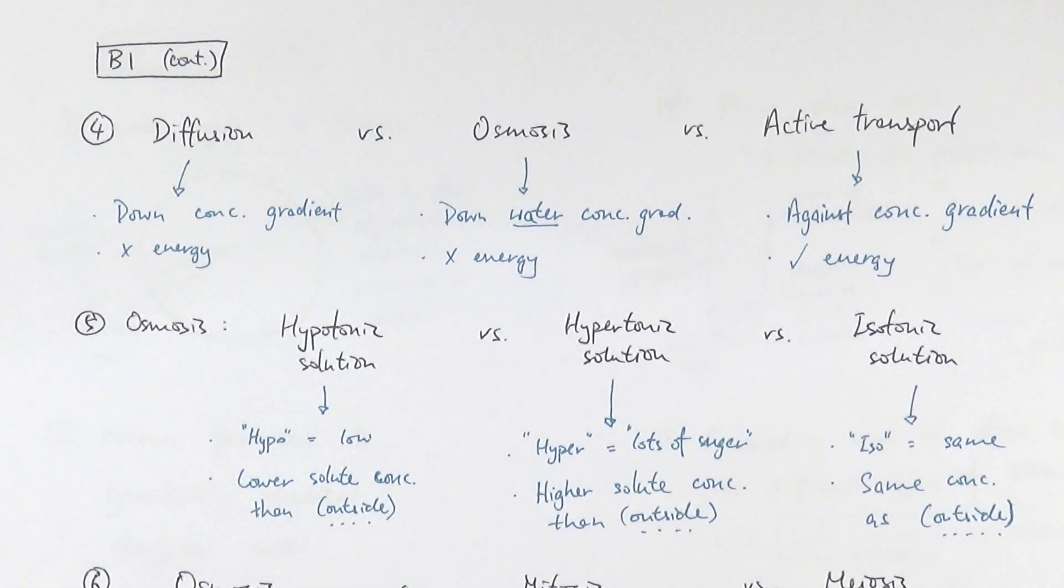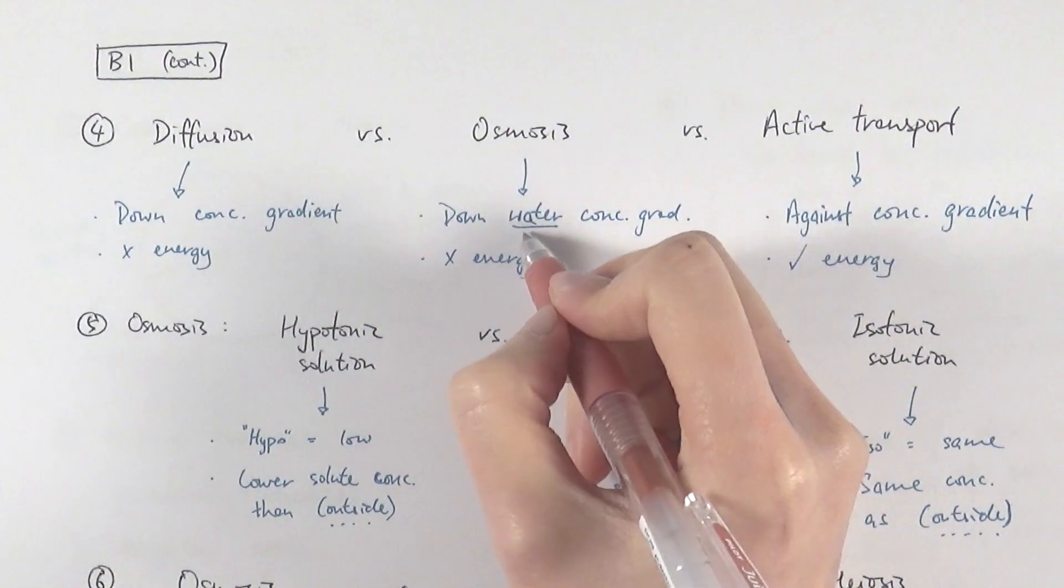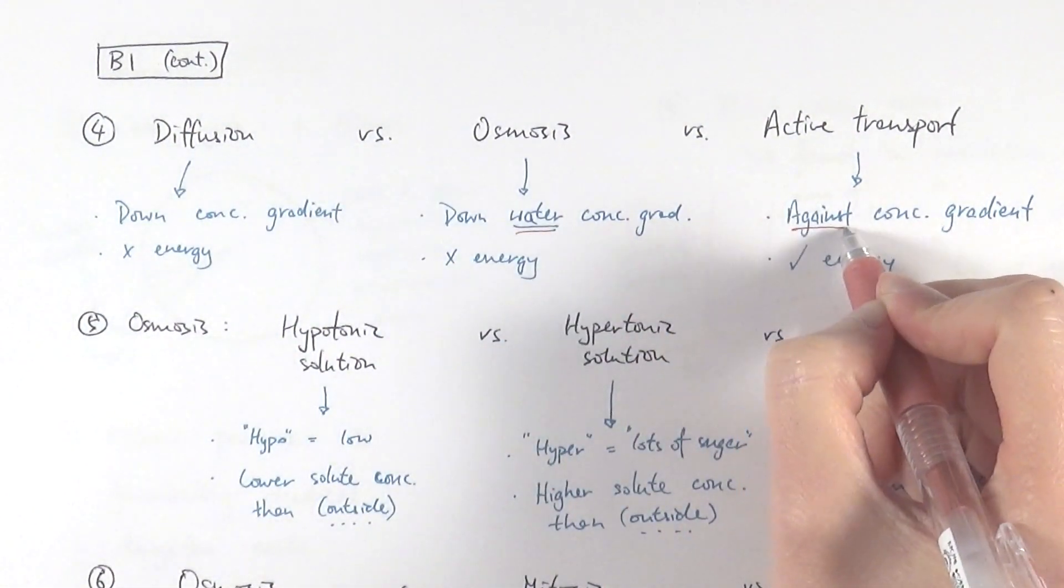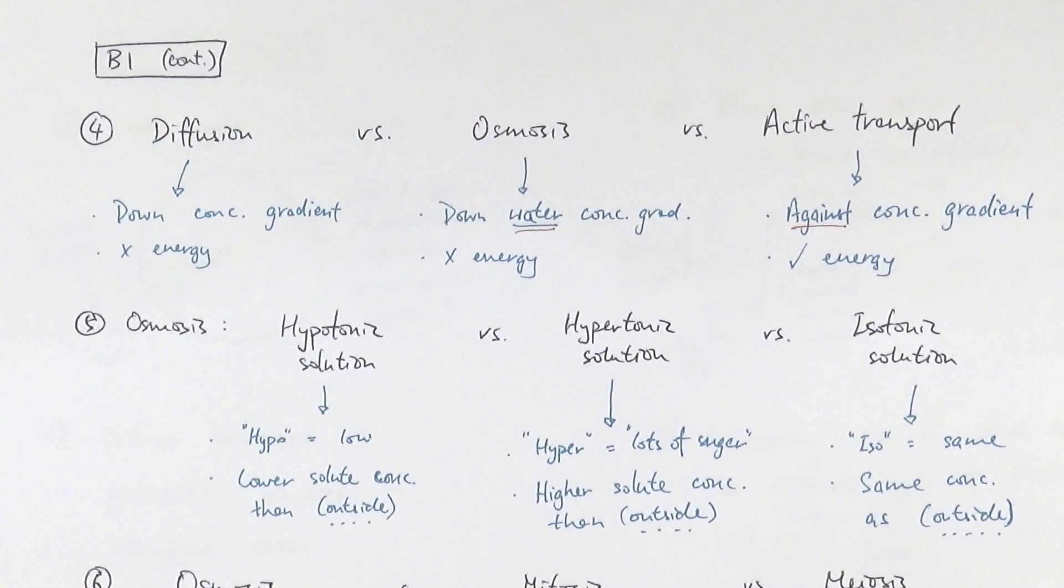Active transport is against the concentration gradient, so don't use the word across or anything like that. Just make sure you use the word against, and because it's against the concentration gradient, therefore they use energy. So key thing is it's down the water concentration gradient and it's against the concentration gradient in these two particular mechanisms.